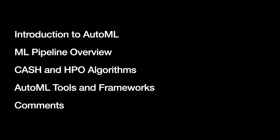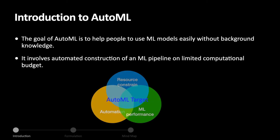Because Neural Architecture Search, or NAS, is a very important and large topic, I'll leave NAS to another talk and not discuss detail here. The goal of AutoML is to help people use ML models easily without background knowledge. It involves automated construction of a machine learning pipeline on a limited computational budget. AutoML concerns multiple targets that include optimized machine learning performance without manual interference on limited computational resources.